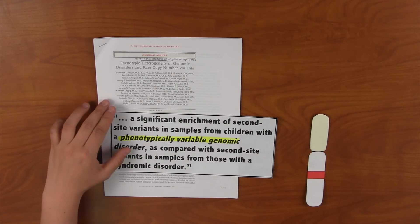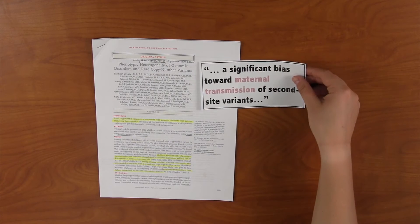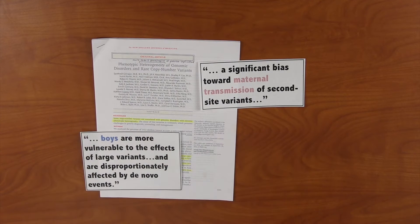This paper also reported a sex bias in terms of transmission of genetic variants. Females are more likely to transmit secondary variants, but boys are more susceptible to the effects of large variants in de novo effects, or mutations that arise in an individual without being passed on by a parent.